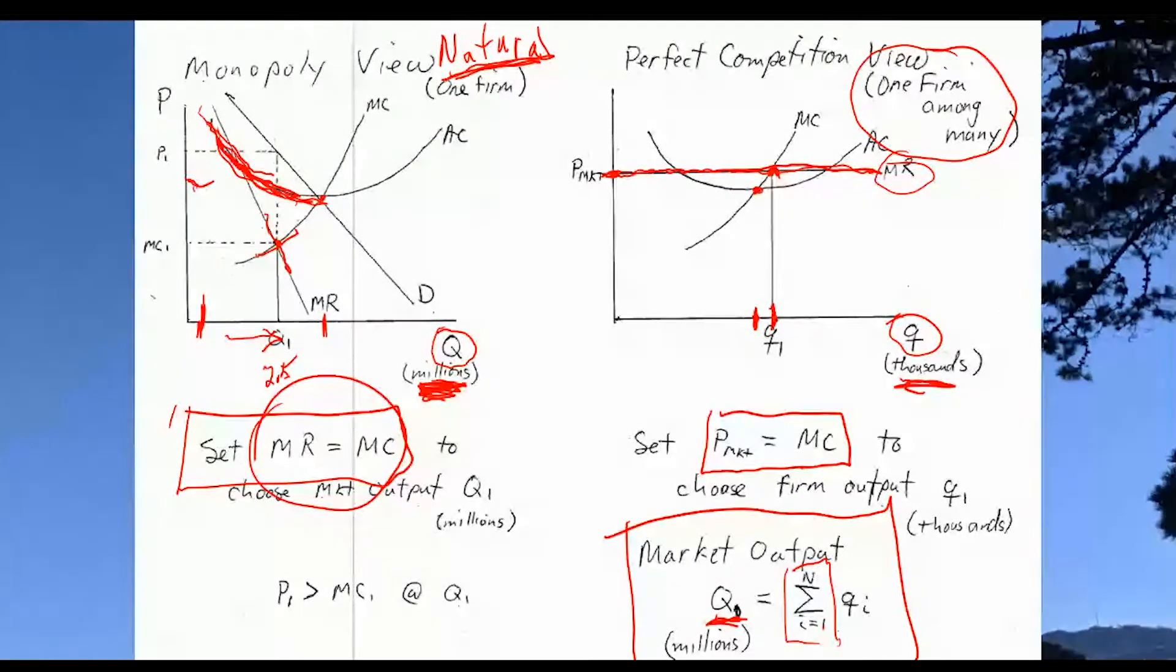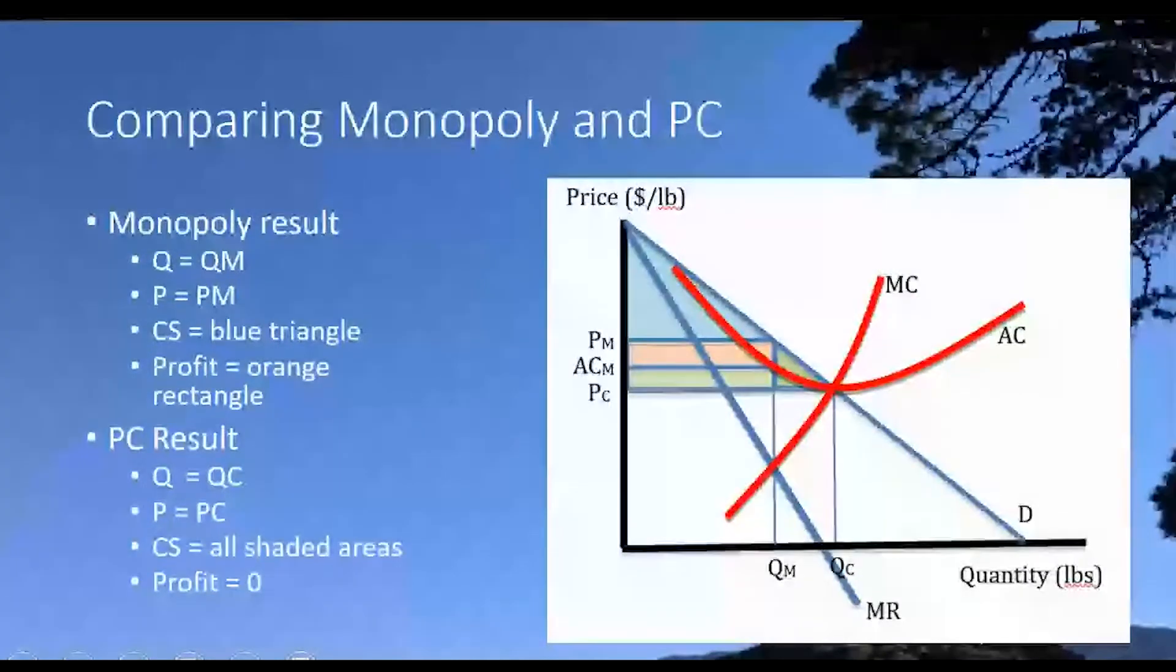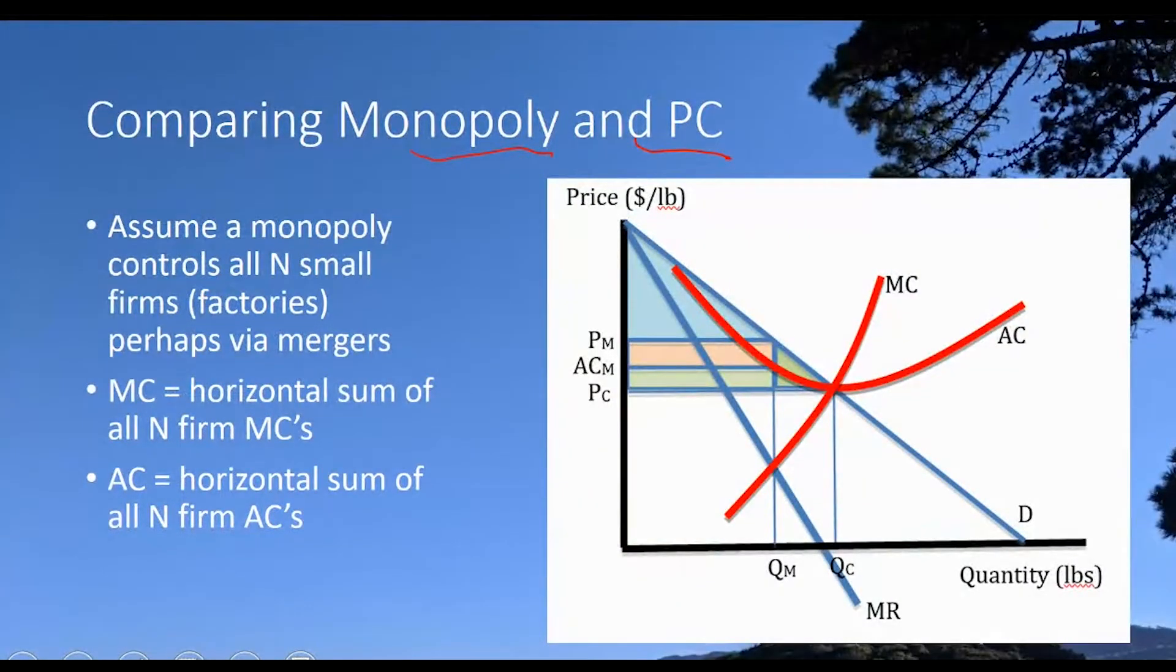Well that is a very different production process than the one we're describing over here where minimum average cost can be found at a much lower level of output. So it's a little bit hard to make that comparison between a monopoly situation and a perfect competition situation because their cost functions are really likely to be very different between the two.